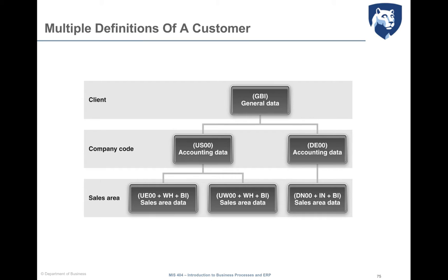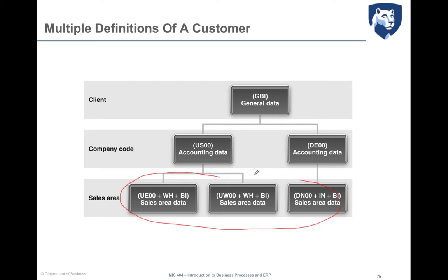Consider that there are multiple definitions of a customer, meaning a customer can be served by different sales areas simultaneously. When the same customer is served by multiple sales areas, its data must be defined separately for each sales area, so that the company can make each sales area autonomous in dealing with that customer.